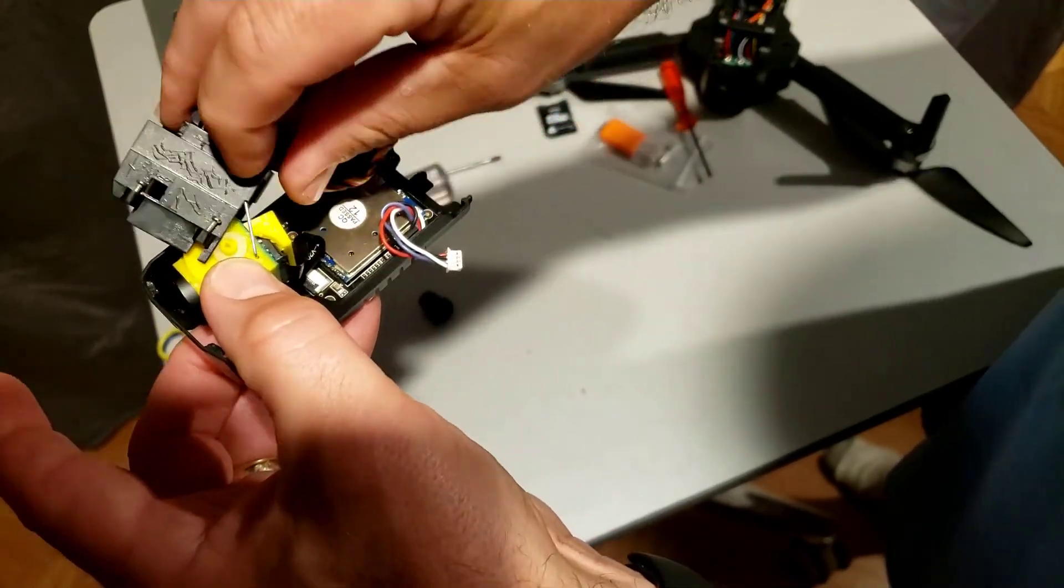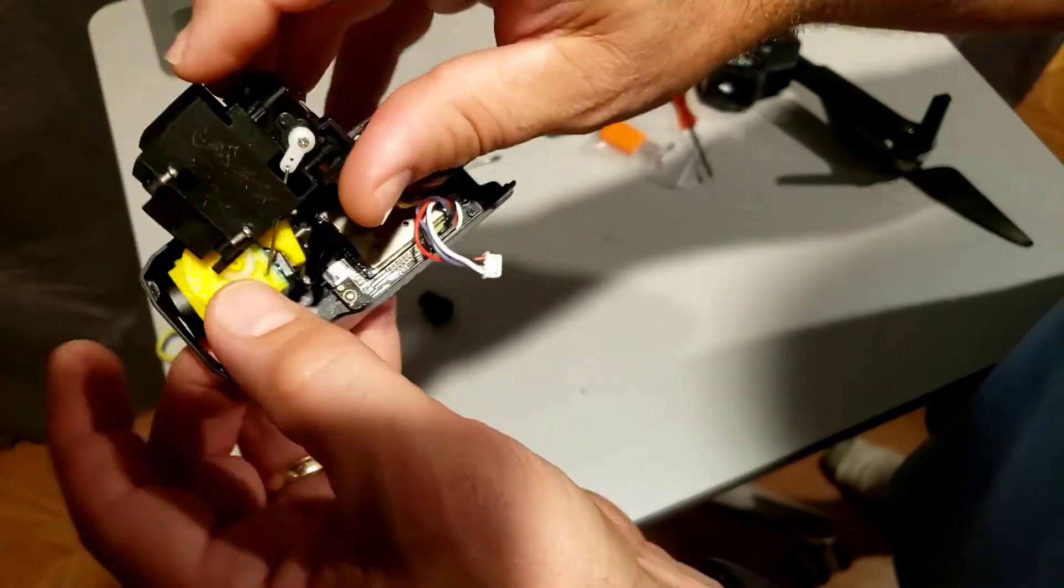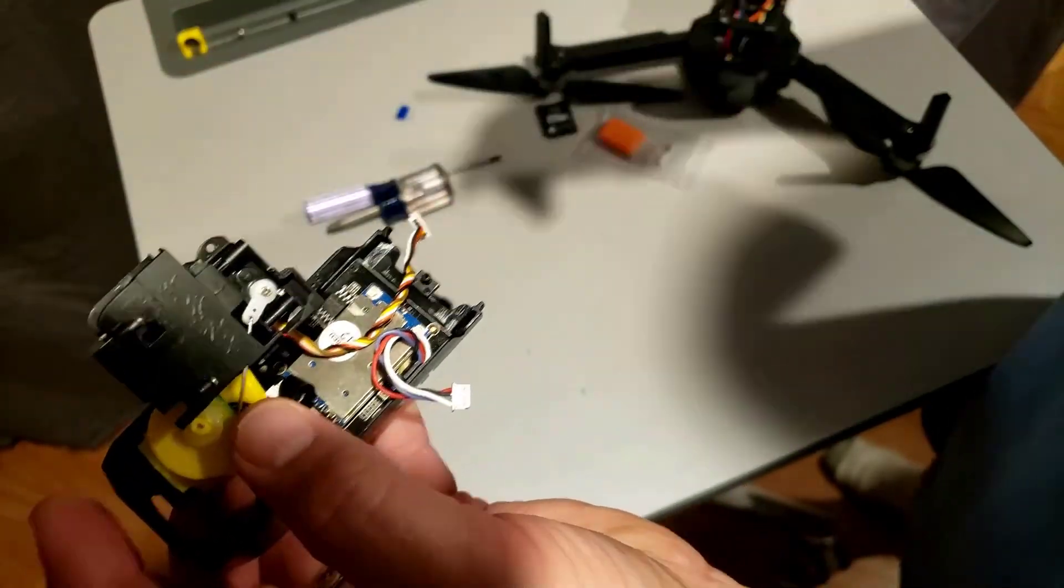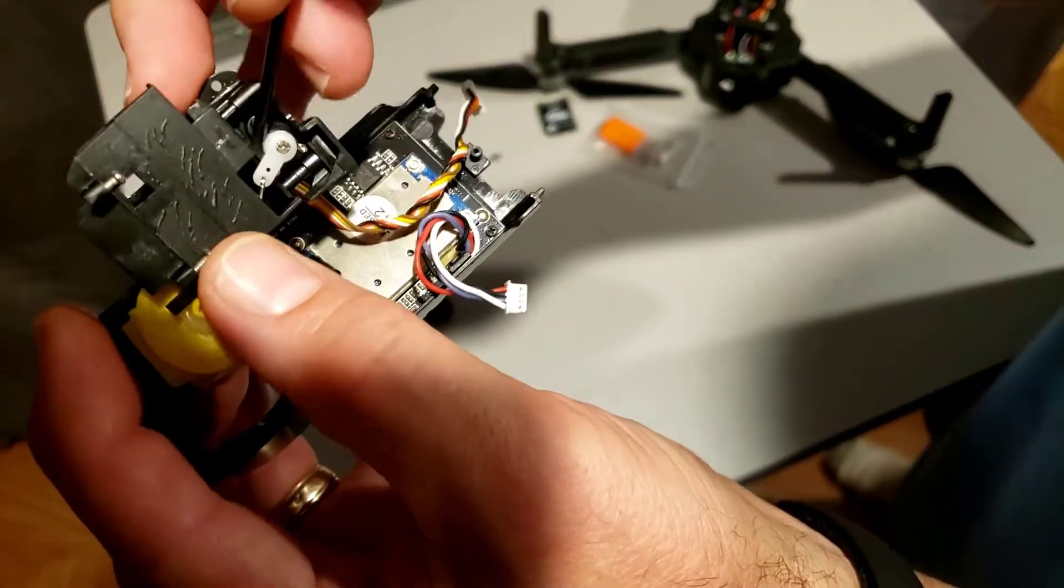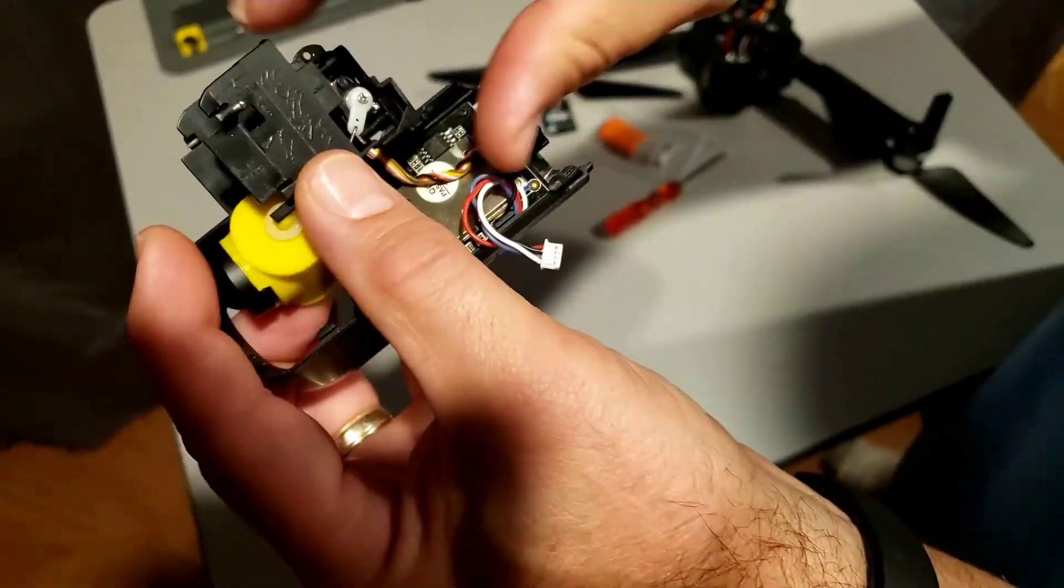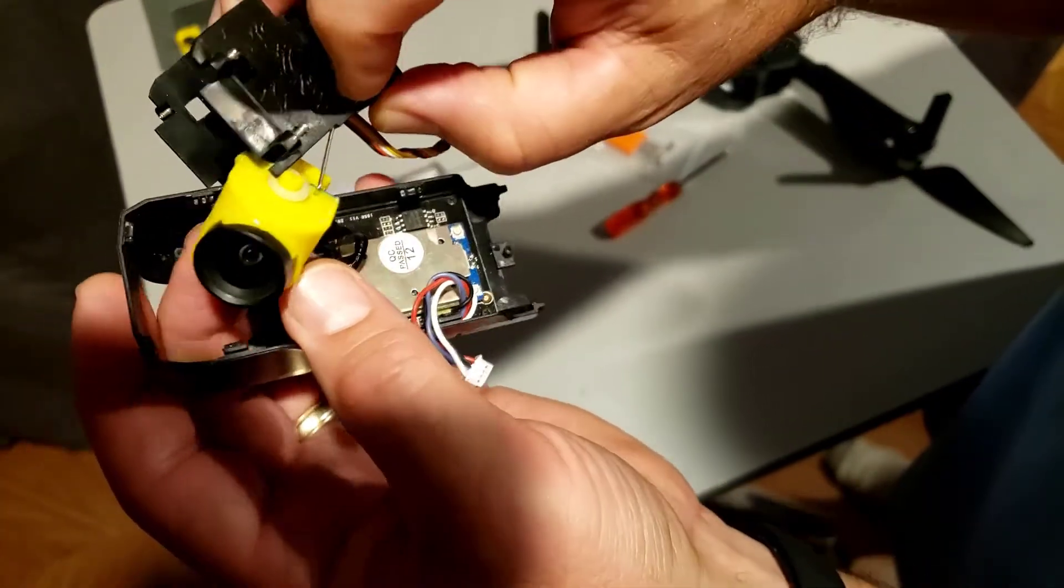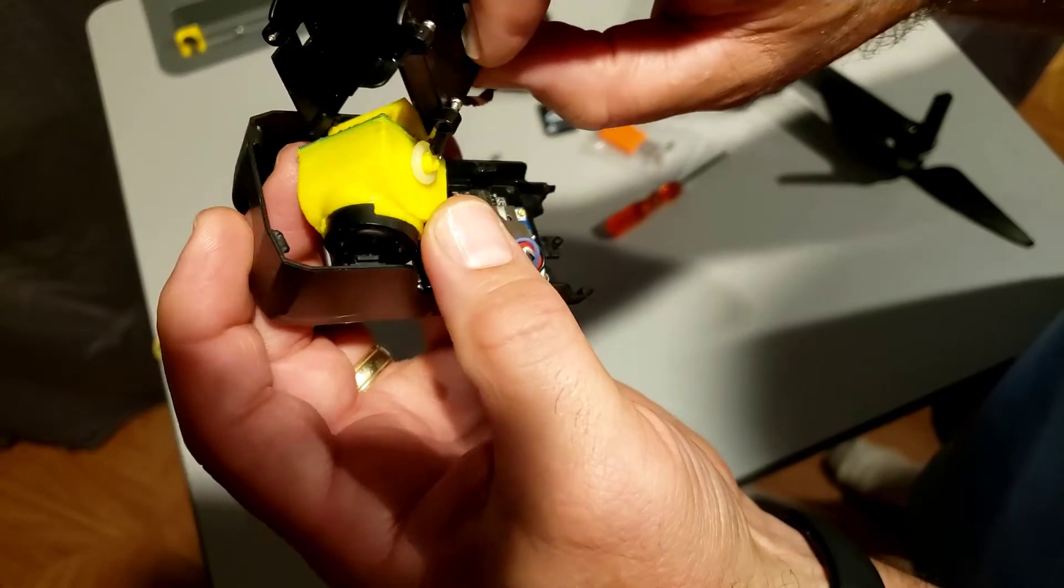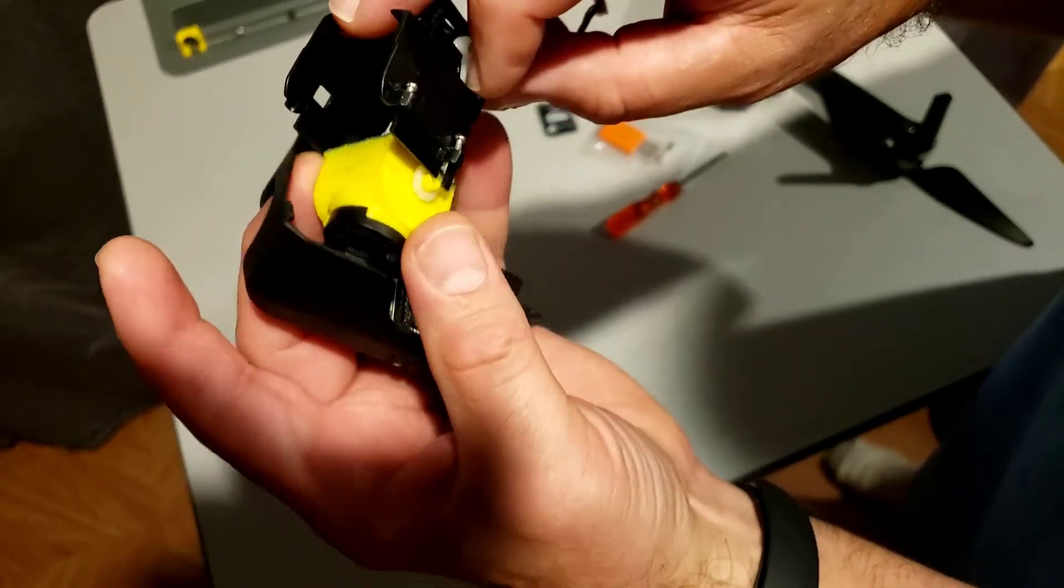Once you've got that in you can bring the servo back up so it's easier to connect. If you can't get it with your fingernail you can just use a little screwdriver to give it a little nudge, and then once you get it moving it should move pretty darn easy. Then we can get this in place.